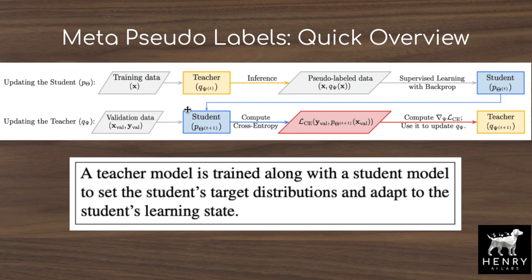The teacher network, parameterized by phi, takes in the training data and produces a pseudo label distribution. The student network fits this label distribution via backpropagation using cross-entropy loss between student predictions y-prime and pseudo labels q_phi(x), updating parameters to theta_t+1. These updated parameters are then evaluated on a held-out validation set, whose performance serves as a reward signal fed back to the teacher via a gradient through a gradient. The teacher is thus trained to maximize the student's validation performance.